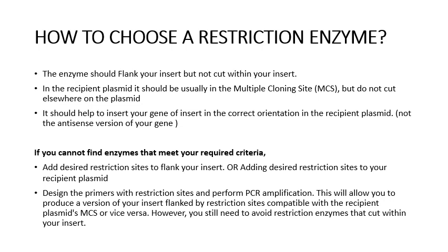If you cannot find a restriction site in your gene of interest or your recipient plasmid, it is very simple — you can design your primer along with a restriction site and do PCR amplification, by which you can add the restriction sites to your gene of interest and your plasmid.